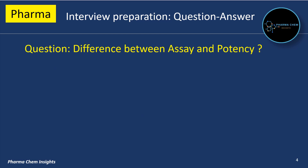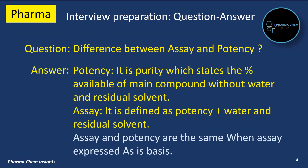3rd Question: Difference between assay and potency. Potency is purity which states the percentage available of the main compound without water and residual solvent. On the other hand, assay is defined as potency plus water and residual solvent. Note that assay and potency are the same when assay is expressed on an anhydrous basis.